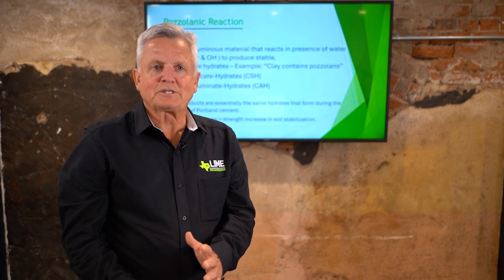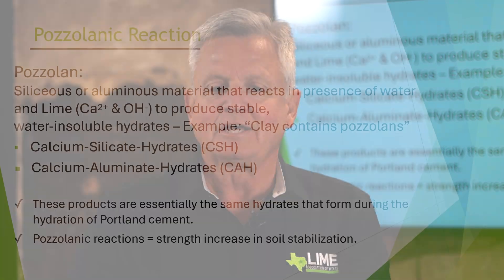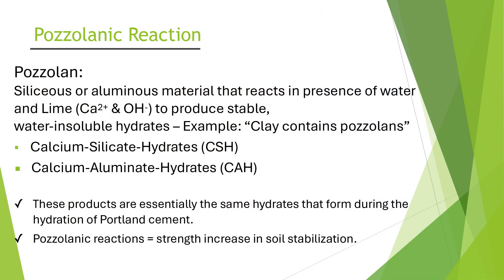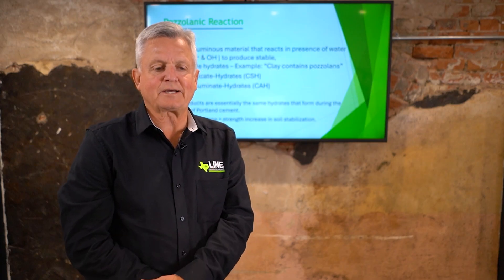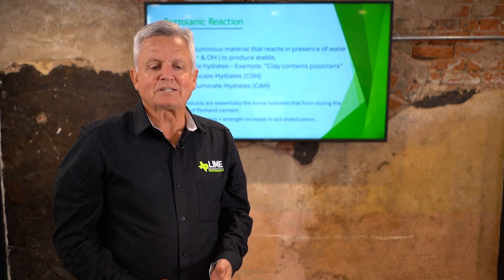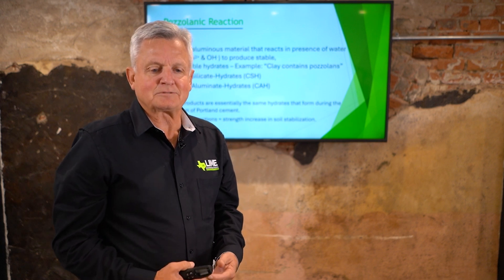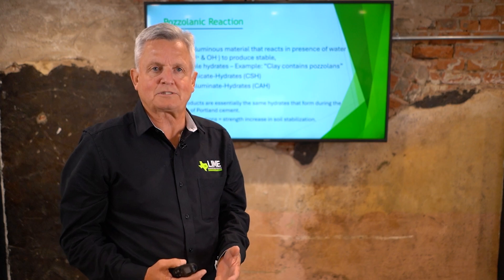Let me start off with a definition of what is a pozzolone. A pozzolone is a siliceous or aluminous material that reacts in the presence of water and lime to produce a stable water-soluble hydrate. For example, clay is a pozzolone. The pozzolonic reaction that forms is called calcium silicate hydrate, or CSH, and calcium aluminate hydrate. Those are the two pozzolonic reactions.